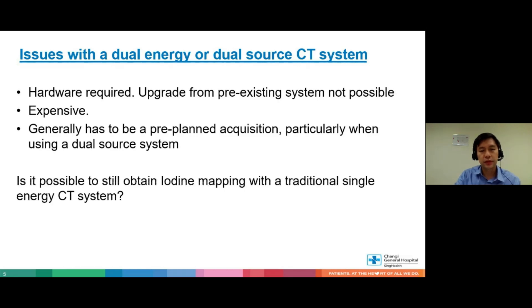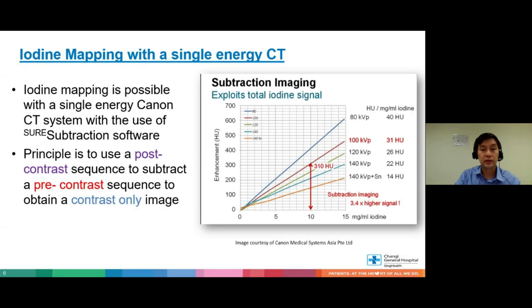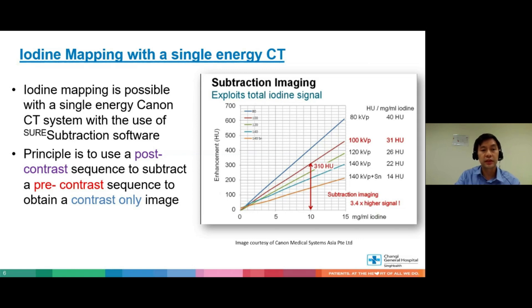So the question is: is it possible to obtain iodine mapping with a traditional single energy system? The answer is yes. Canon is doing this with a single energy system using their shear subtraction software. The principle is quite simple — it uses a pre-contrast sequence and subtracts it to obtain a contrast-only image. You just do a simple subtraction and you can get the iodine map.